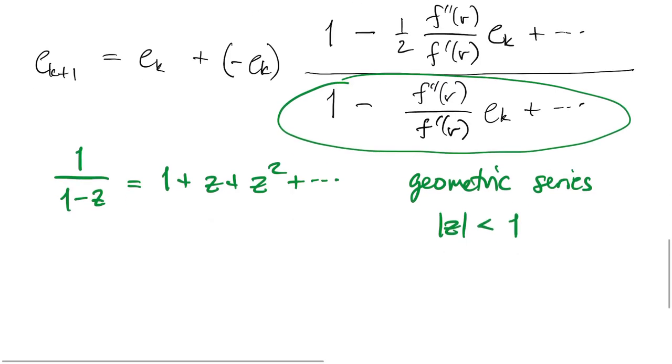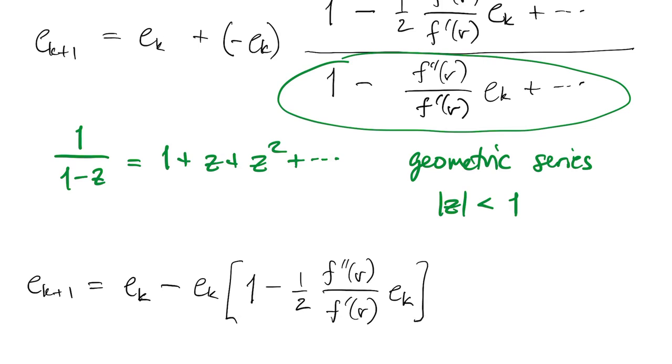So here I have something in the form of 1 over 1 minus z. I'll replace that with 1 plus z, and then stuff that I'll ignore. Our error iteration now has the product of these two series, which I'm going to truncate at two terms each.